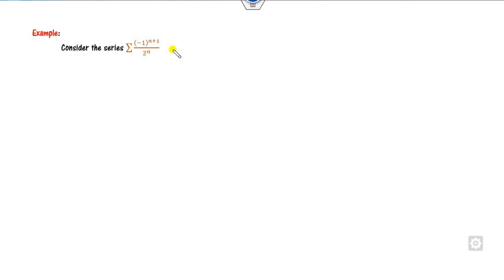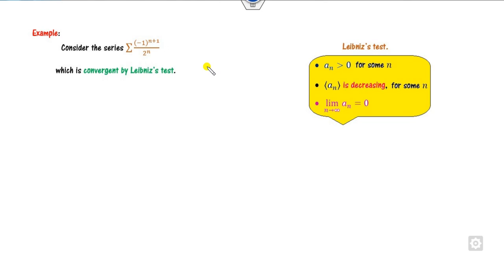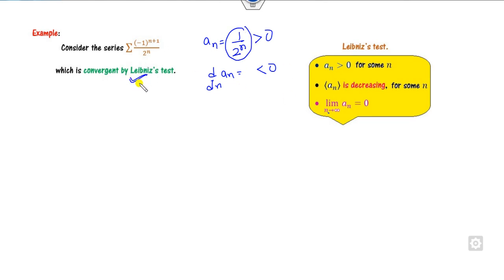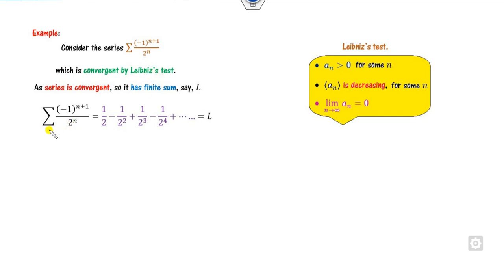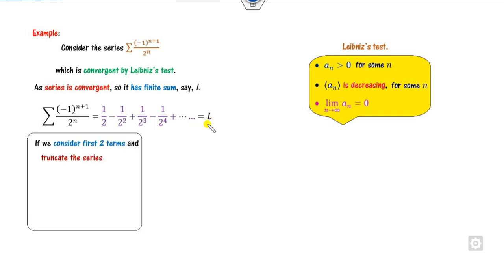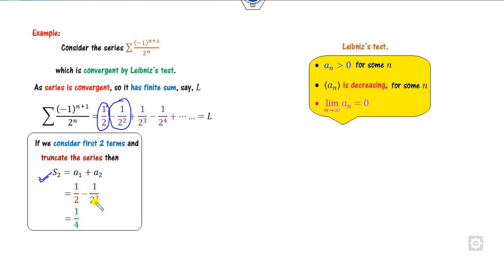For example, consider this alternating series. Firstly you have to prove it is convergent; in order to find the error bound your series must be convergent. Clearly this series is convergent because if you consider a_n, it is always positive, its derivative is less than 0, and as n approaches infinity a_n goes to 0. Therefore this series is convergent by the Leibniz test, meaning its sum is a finite number L. If I consider the first two terms A1 and A2 and truncate the series, the nth partial sum will be A1, A2, and so on — for example (-1)^4 times 1/4.